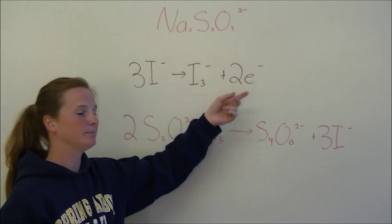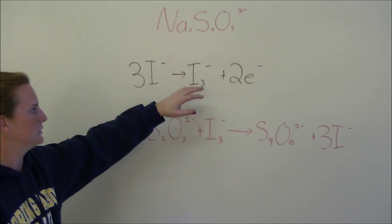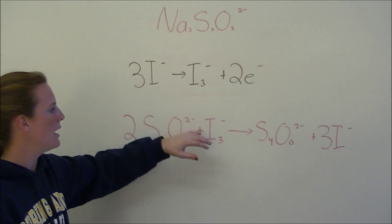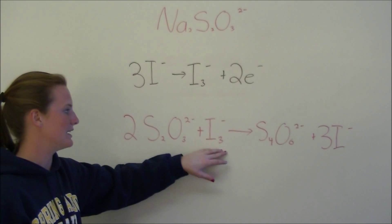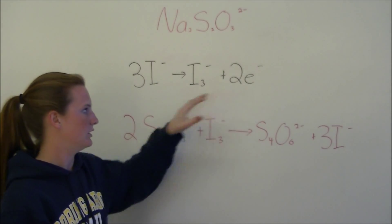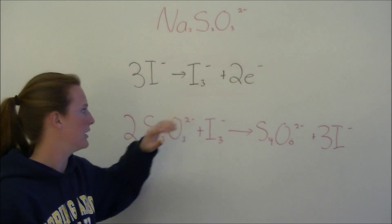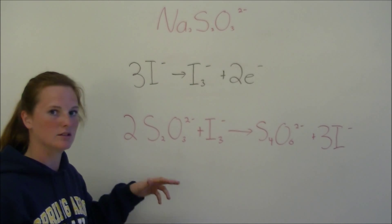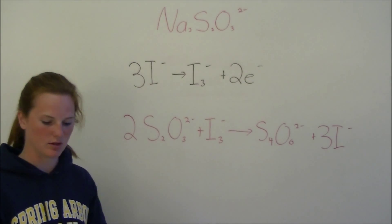The exact same process can be replicated. However, we have to take into consideration the number of thiosulfates consumed per electron. For every two electrons produced, you're still going to have one iodine. But the difference is for every one iodine, two thiosulfates. So the overall ratio is for every one electron, one thiosulfate. It's a one-to-one ratio rather than a two-to-one ratio.